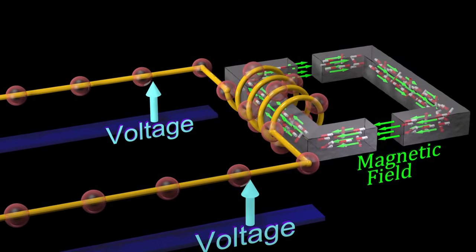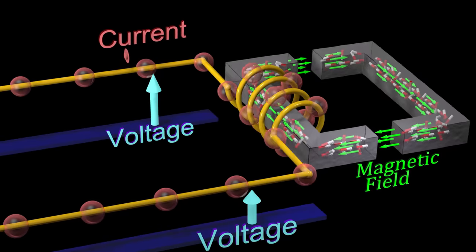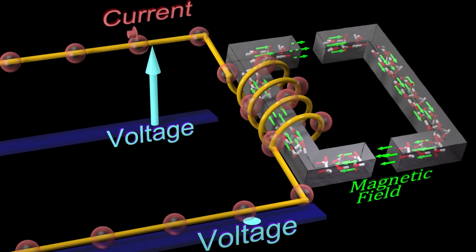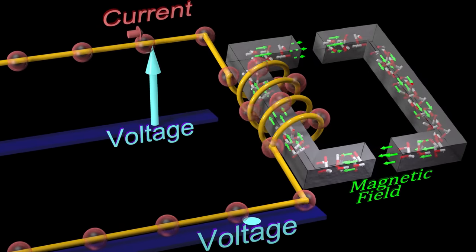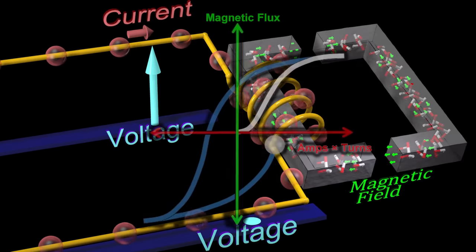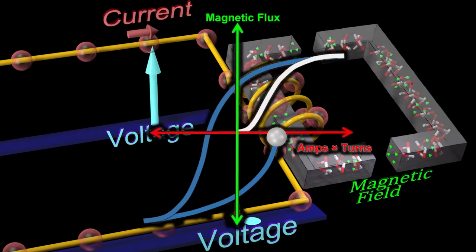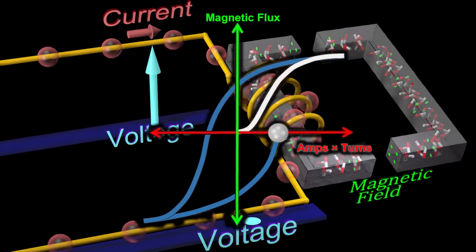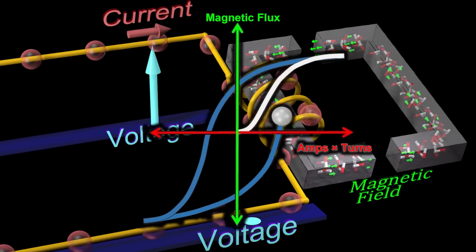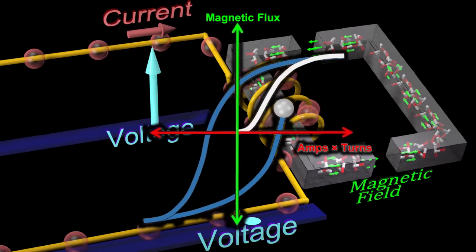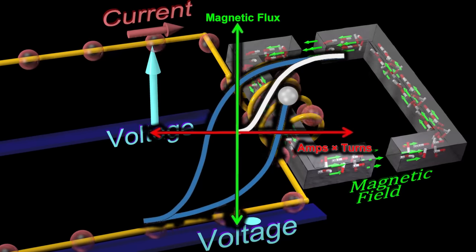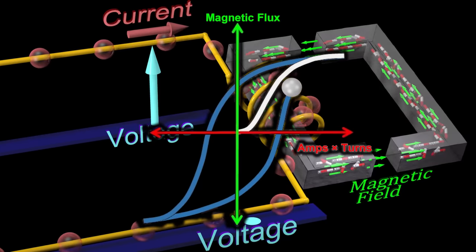Materials where a high percentage of magnets are still aligned when the current is zero dissipate more energy as heat as the magnets flip back and forth. Here, energy is being supplied from the circuit. Some of this energy is being dissipated as heat in the material, and some of this energy is being stored in the magnetic field.